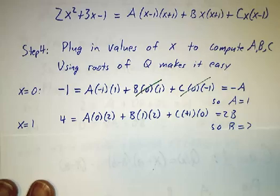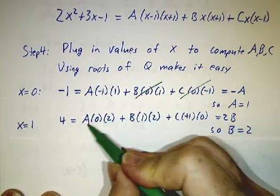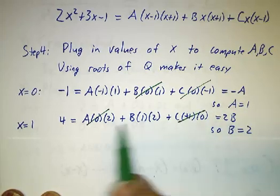If we plug in x equals 1, we get 4 is, well, now A doesn't contribute, and C doesn't contribute. And you get the 2B is 4, so B is 2.